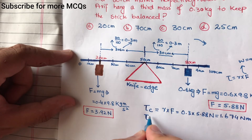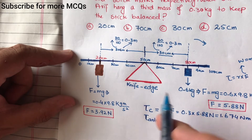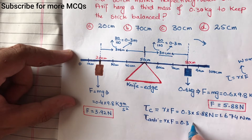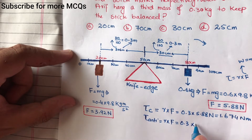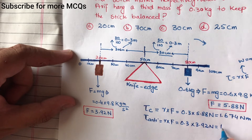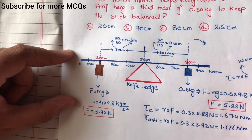اب anti-clockwise torque معلوم کریں گے۔ τ anti = r cross F — یہاں پر r = 0.3 meter ہے، اور F = 3.92 Newton ہے۔ دونوں کو multiply کریں تو anti-clockwise torque = 1.176 Newton meter آئے گا۔